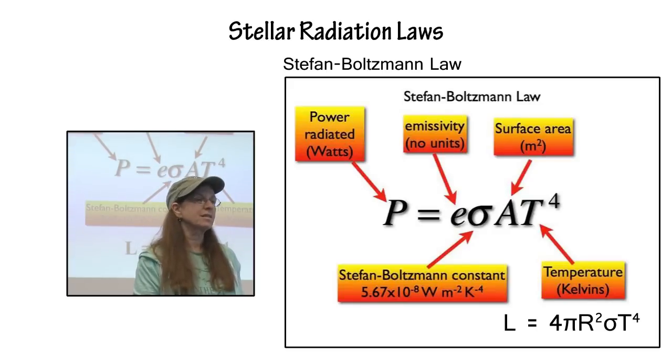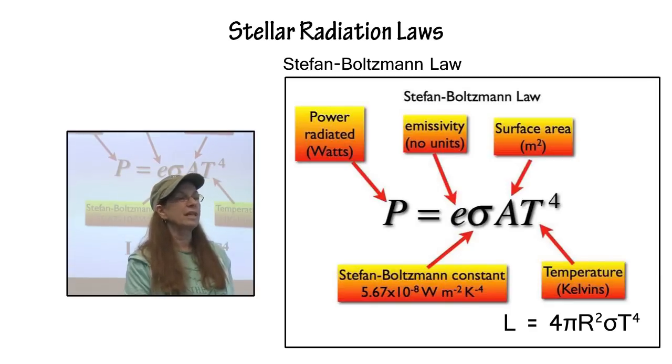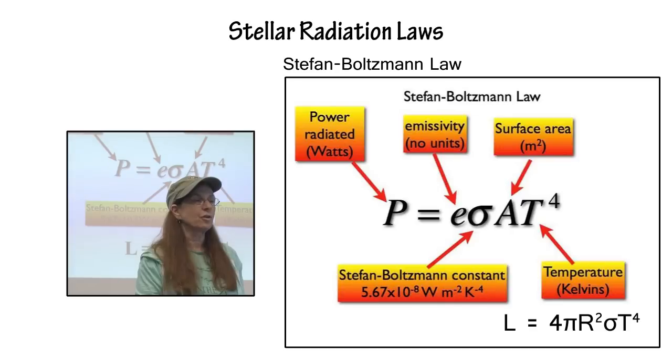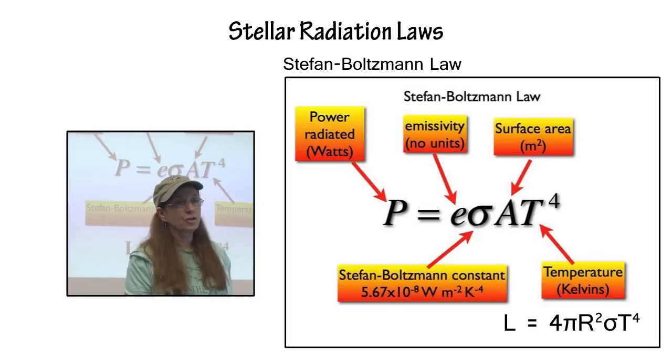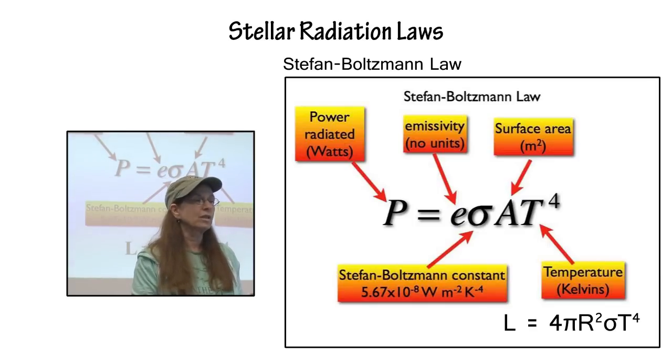Then we have Stefan-Boltzmann's law, which basically is equal to the area under the curve, the black body radiation curve, and is the result in actually the total power put out for the star, which is related to its surface, the area of the surface and its temperature. And it's also related to its luminosity, which again is related to its radius and its temperature.